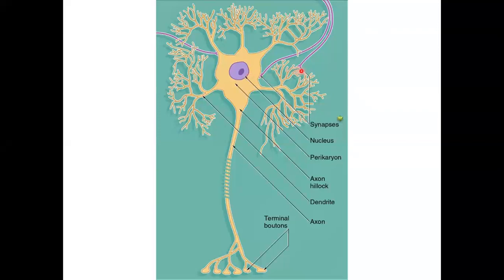A synapse is the junction of one terminal with another, with a synaptic cleft in between where the neurotransmitter is released to carry the impulse. The dendrites are at the receiving end, while the axon carries the impulse away from the cell body of the neuron.